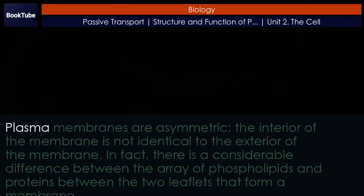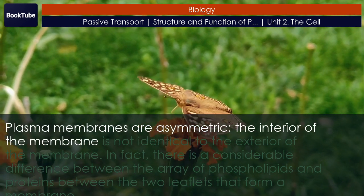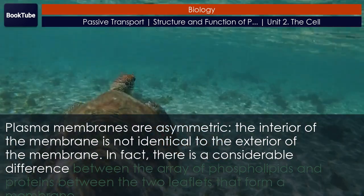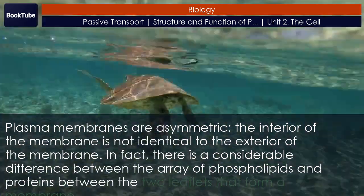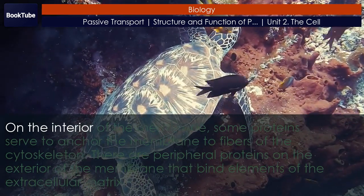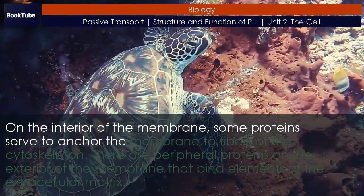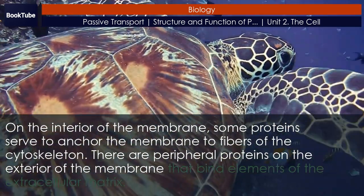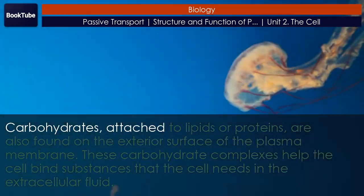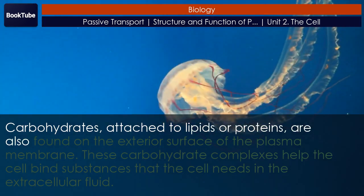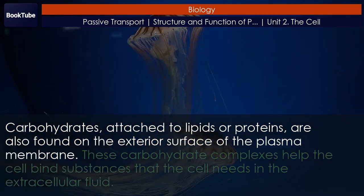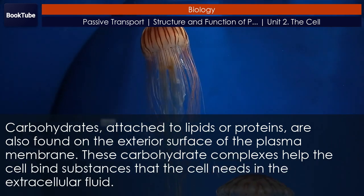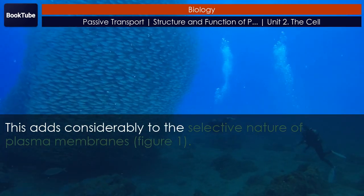Selective permeability: plasma membranes are asymmetric. The interior of the membrane is not identical to the exterior. In fact, there is a considerable difference between the array of phospholipids and proteins between the two leaflets that form a membrane. On the interior of the membrane, some proteins serve to anchor the membrane to fibers of the cytoskeleton. There are peripheral proteins on the exterior of the membrane that bind elements of the extracellular matrix. Carbohydrates attached to lipids or proteins are also found on the exterior surface of the plasma membrane, and these carbohydrate complexes help the cell bind substances that the cell needs in the extracellular fluid, adding considerably to the selective nature of plasma membranes.